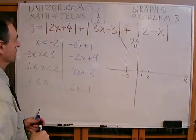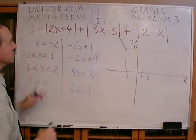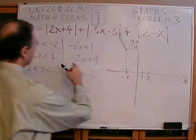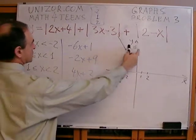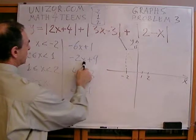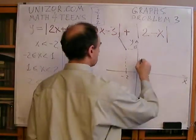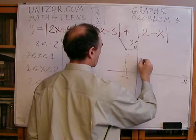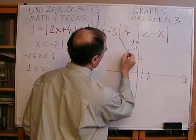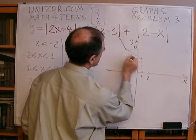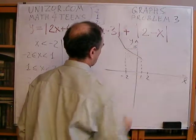Next, minus two x plus nine, from minus two to one. So let's calculate it at one. At minus two, by the way, we already know that's thirteen. And at one, it will be minus two plus nine, it's seven. So it's somewhere here. So the graph will go on this segment as a straight line between these two lines, between these two points.